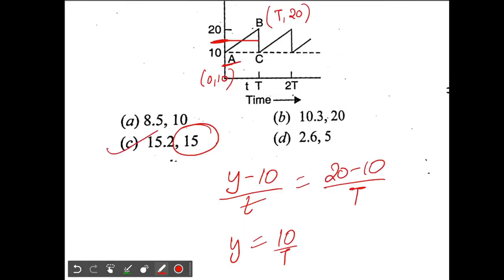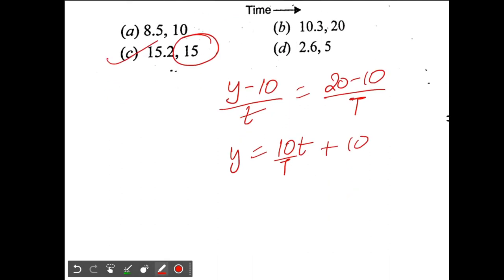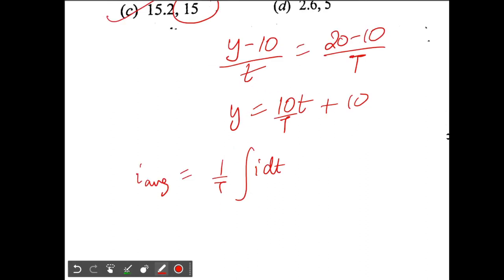Now, i average calculation is very easy: 1 by time period, integration i dt, limits 0 to capital T. So 1 by time period - when you integrate this with respect to time, what do you get?